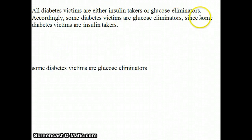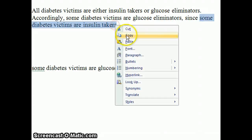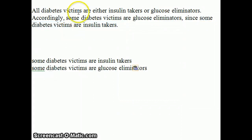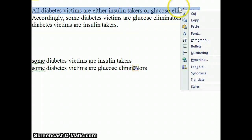One premise is going to be indicated by 'since,' because that is a premise indicator. And then the other premise, of course, is this: All diabetes victims are either insulin takers or glucose eliminators.